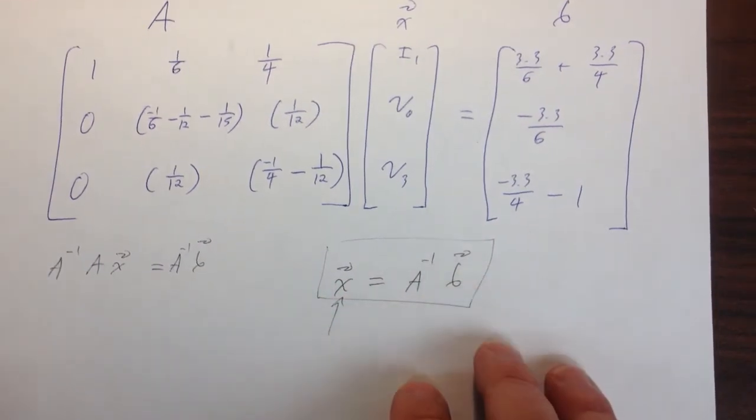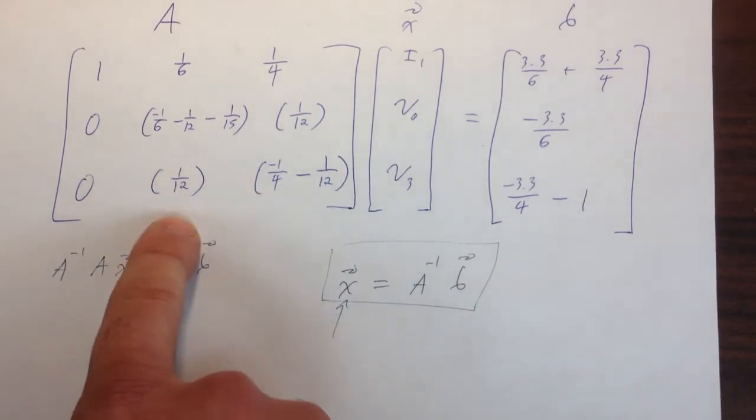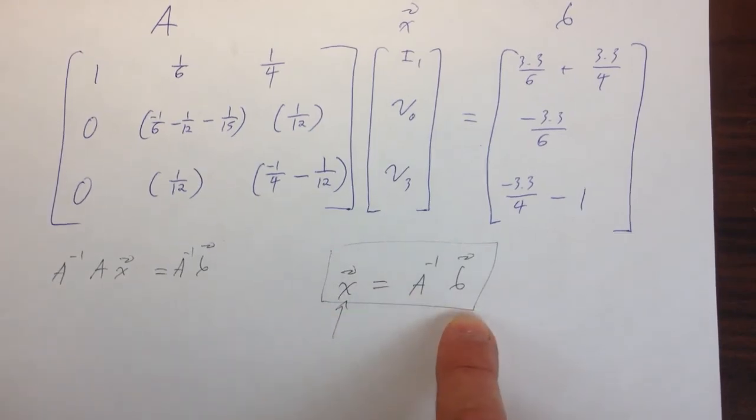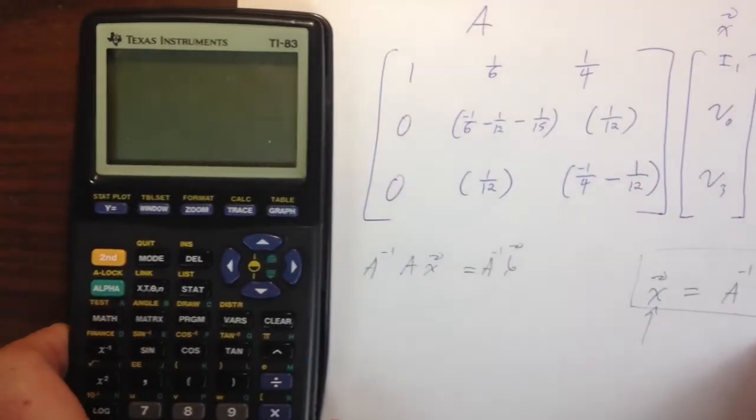What we're going to do is we're going to put our matrix A and our matrix B into the calculator, and then we're going to compute A inverse and multiply it times our matrix B.